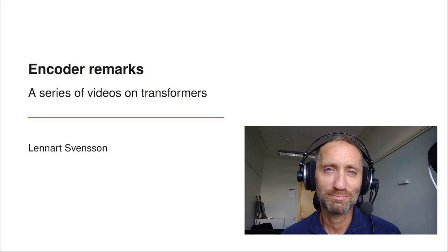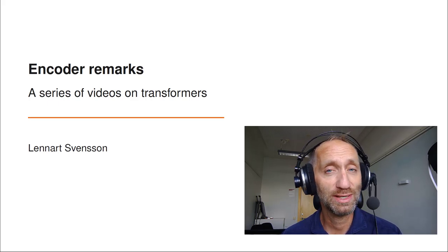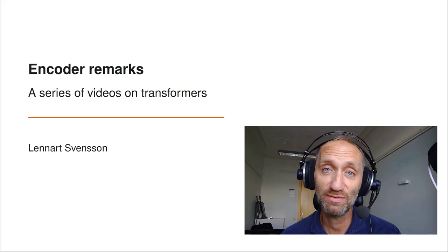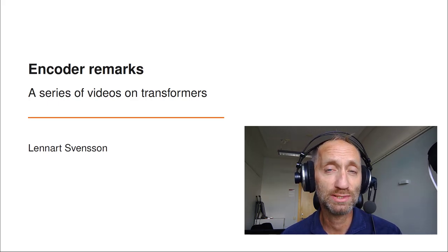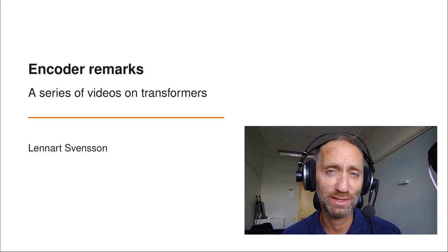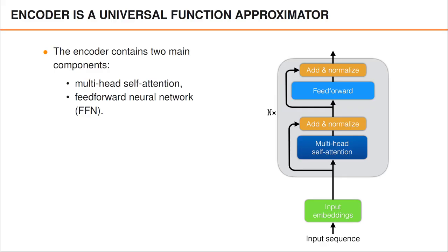The transformer encoder has a number of important and interesting properties. In this video we will mention a few properties that we skipped in the previous videos. Each layer in the encoder contains two main components: the multi-head self-attention and the feedforward neural network.